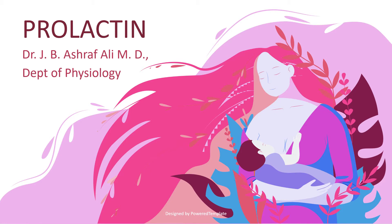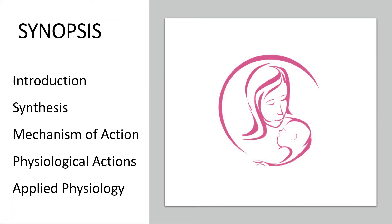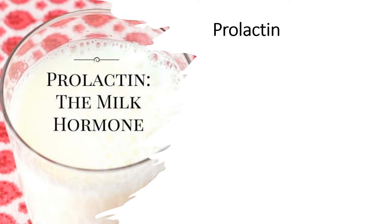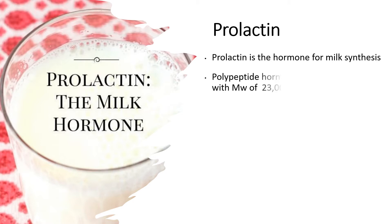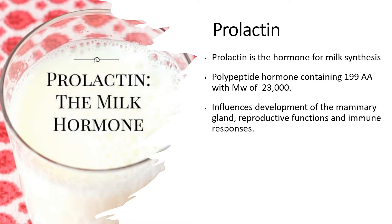Today's topic is prolactin, covered under the following headings: introduction, synthesis of prolactin, mechanism of action of prolactin, physiological actions of prolactin, and applied physiology. Prolactin is a hormone for milk synthesis. The term prolactin refers to a hormone that favors lactogenesis — 'pro' means favoring and 'lactan' refers to lactogenesis. It is a polypeptide hormone containing 199 amino acids with a molecular weight of 23,000. It also influences the development of the mammary gland, reproductive functions, and immune responses.